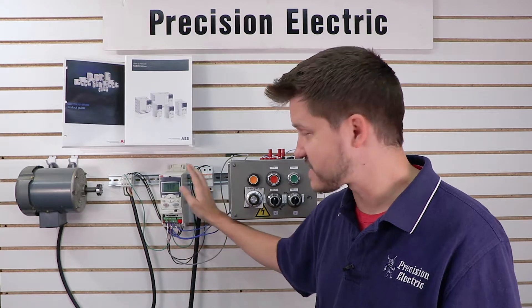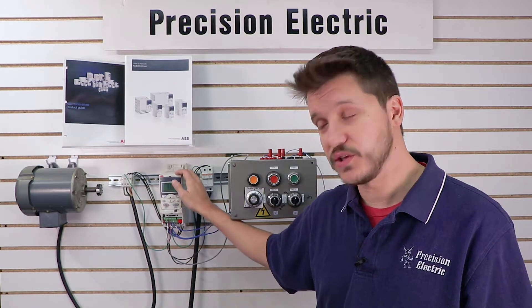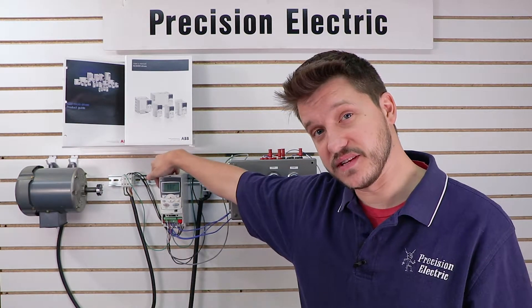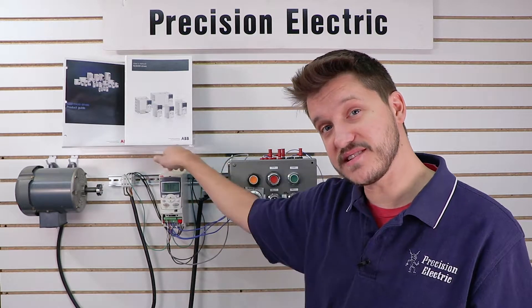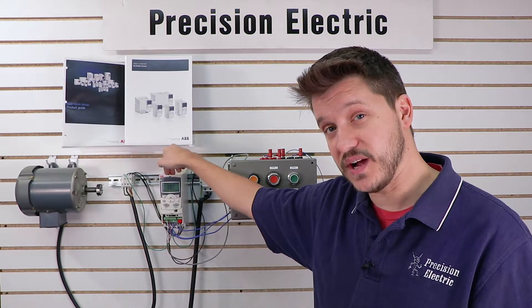If you had a three phase drive, then you would have three fuses that were actually protecting the drive. Now, in order to size the fusing on this drive, you want to look on the nameplate on the side of this. In my case, this is a 6.1 amp input drive.